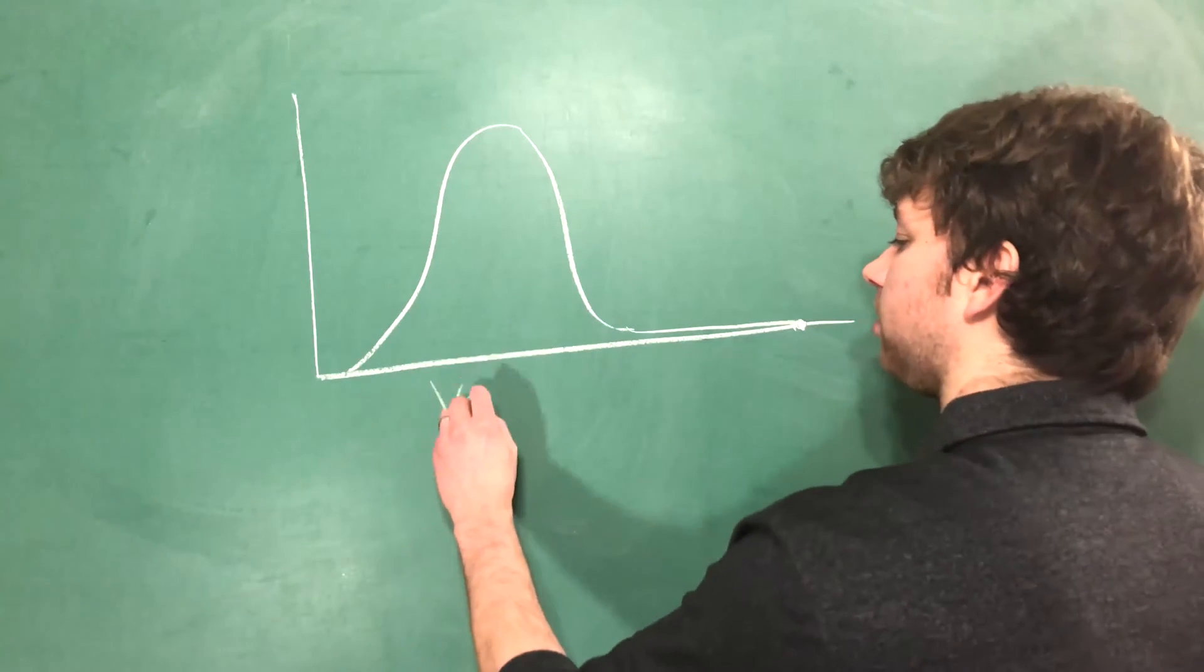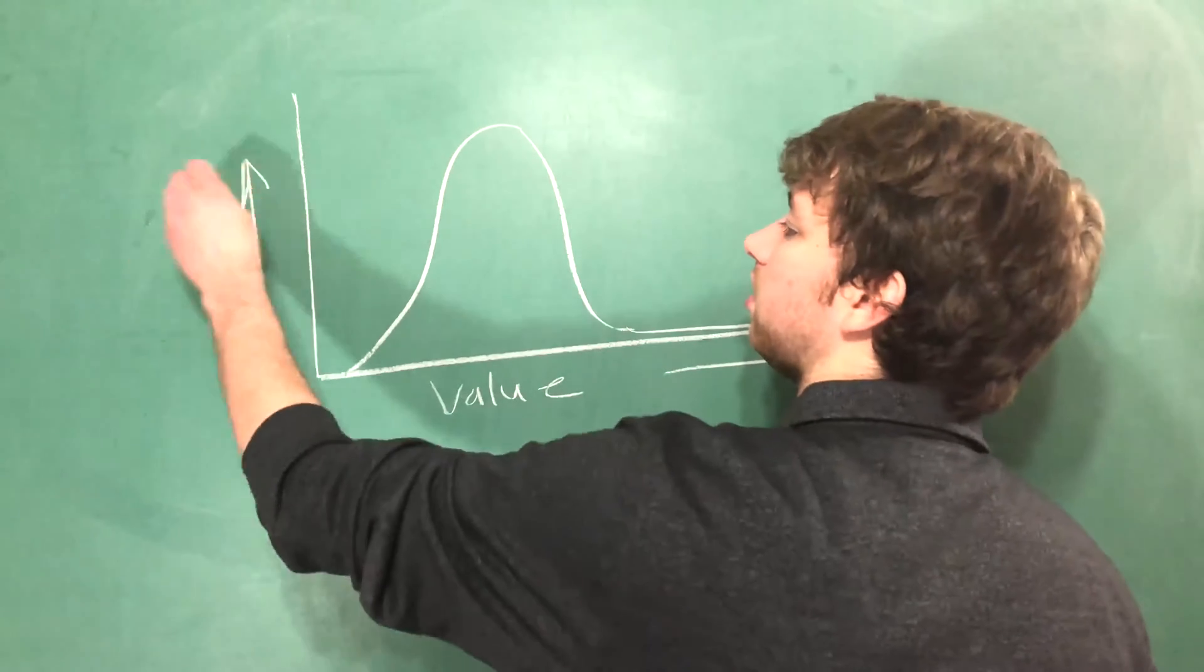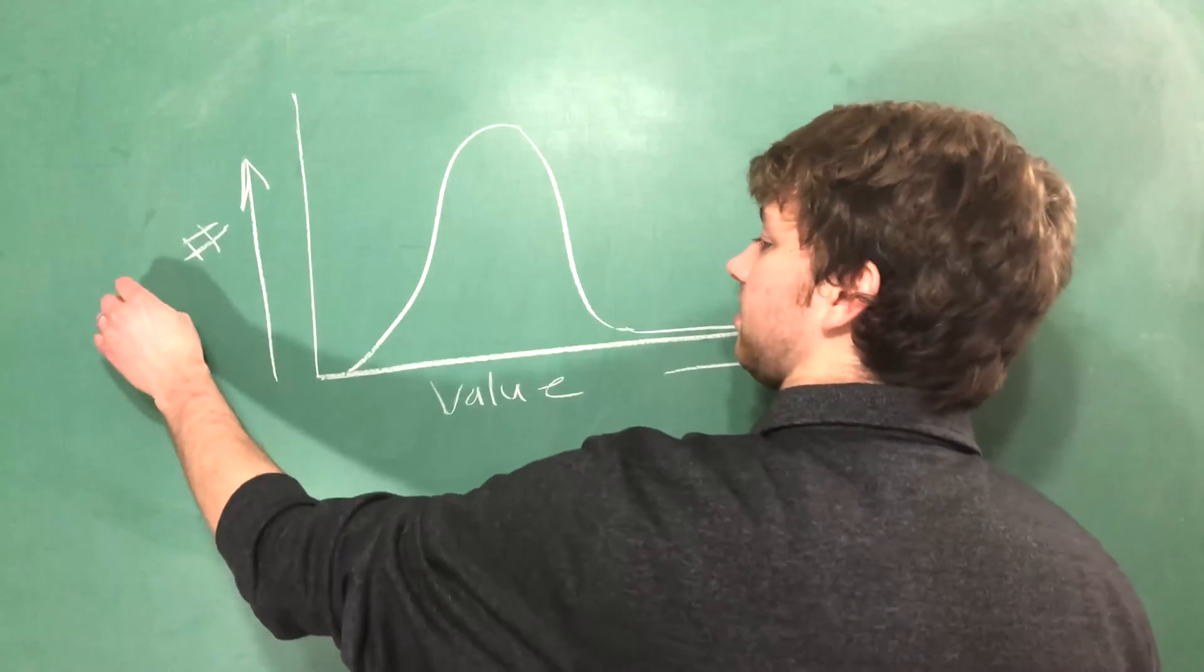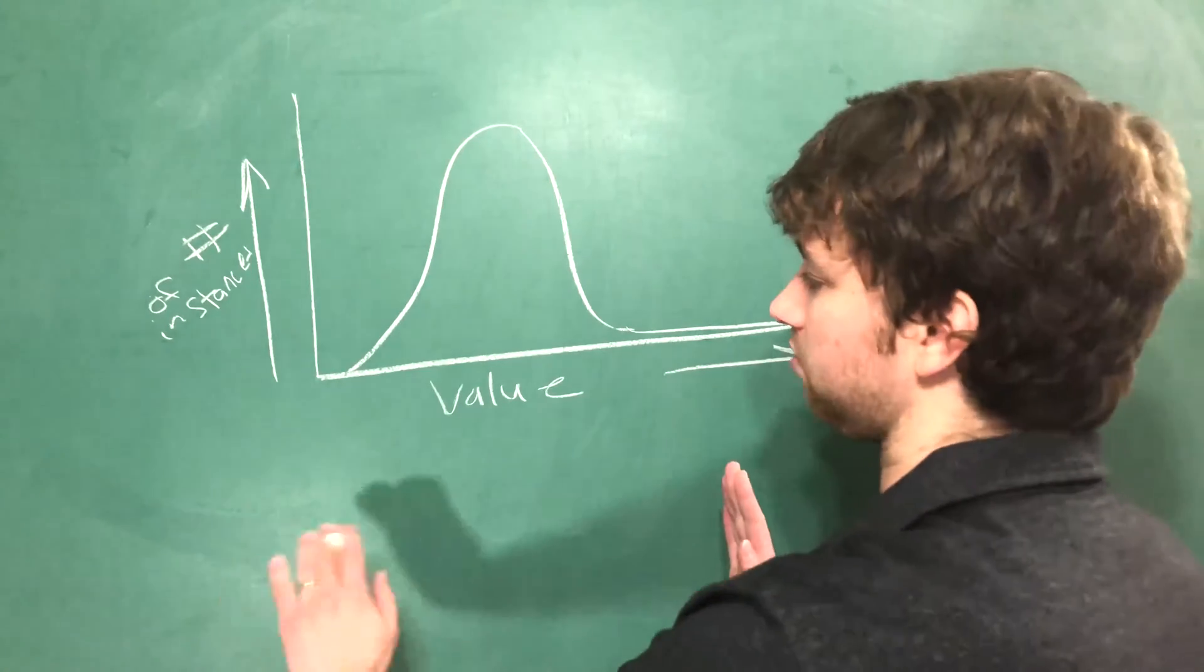This is the value, how big it is, and this is number of people or instances if we want to be vague. That is an outlier. The same thing could happen in the opposite direction.